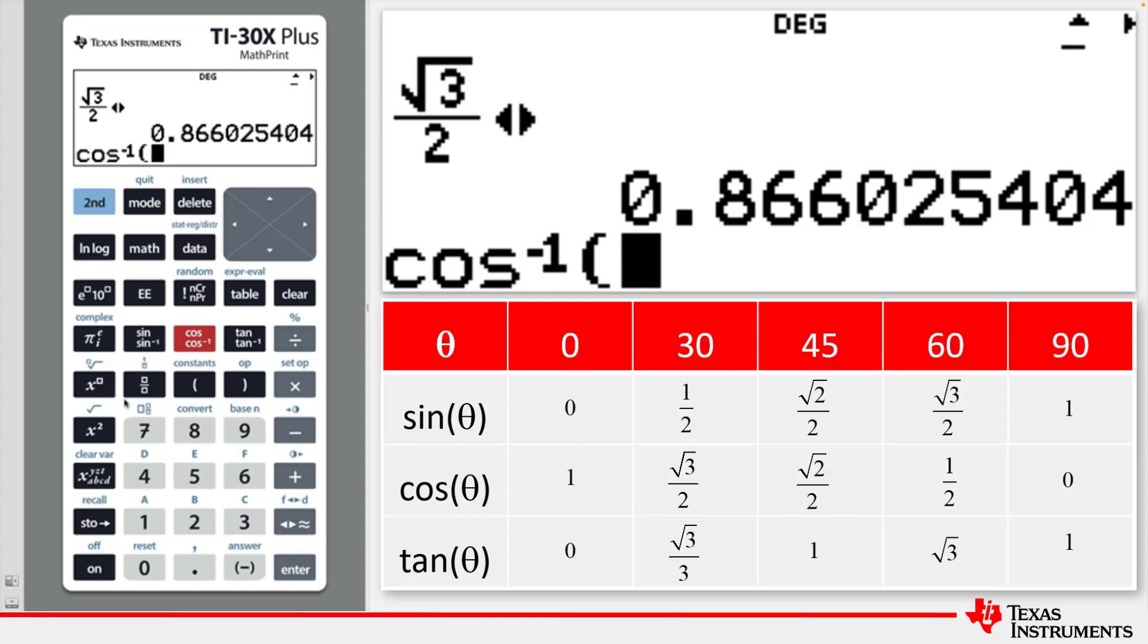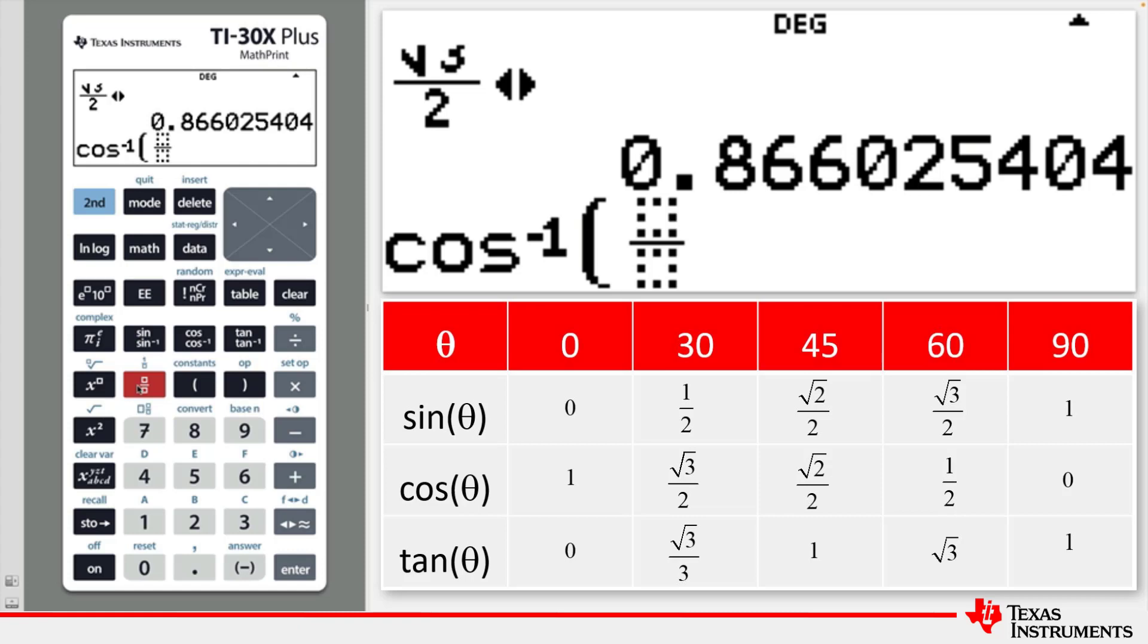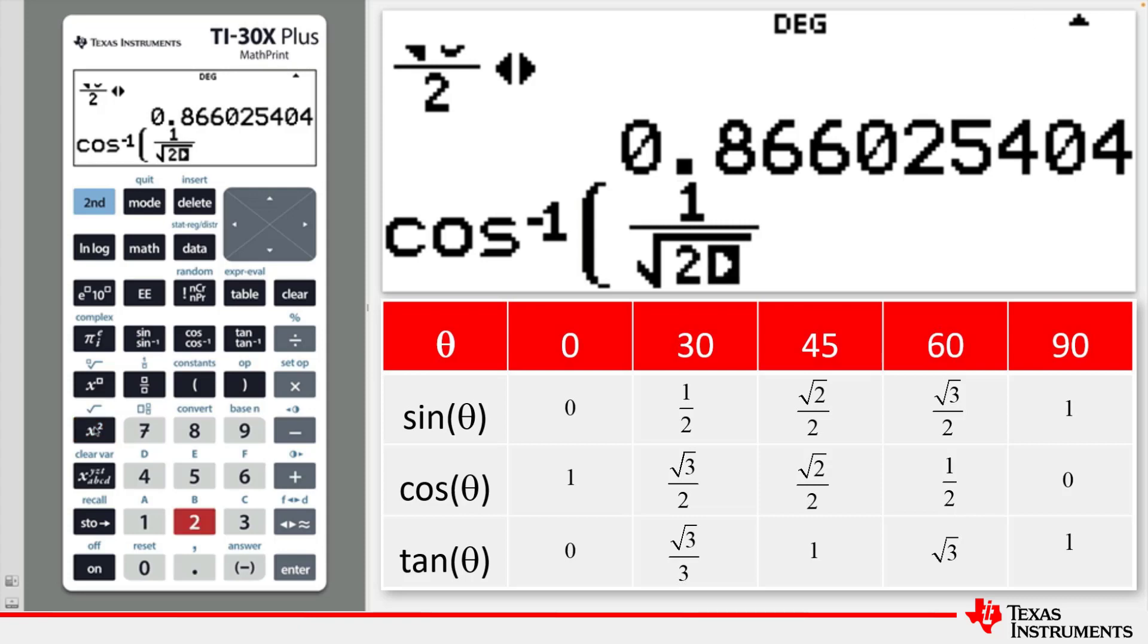And we'll use the fraction bar, 1 over the square root of 2. Close the brackets and press Enter.